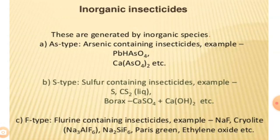Arsenic-containing insecticides include lead arsenate and calcium arsenate. Lead arsenate was widely used for the control of codling moths and many other chewing insects. It is still employed for cotton insects.